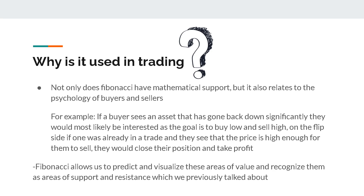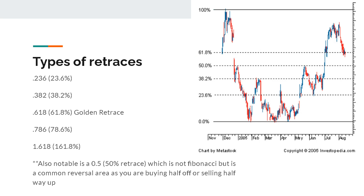When you're using Fibonacci, you can see common retrace areas where other people might be thinking, hey, it's gone up quite a bit, so maybe I should sell — or it's gone down far enough to a point where maybe I should buy. Fibonacci allows us to predict and visualize these areas of value and recognize them as areas of support and resistance, which we also previously talked about.